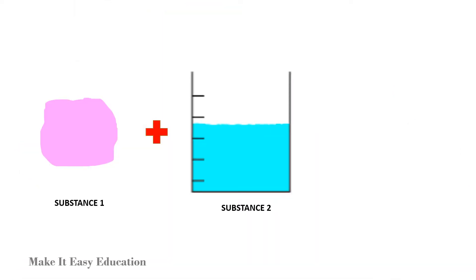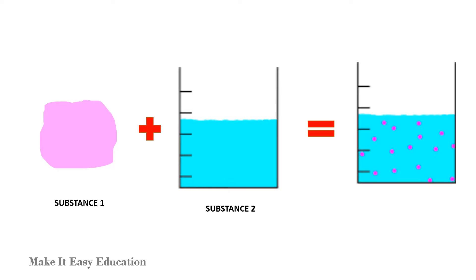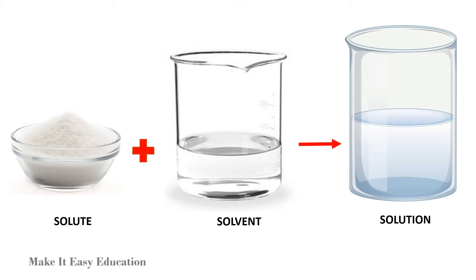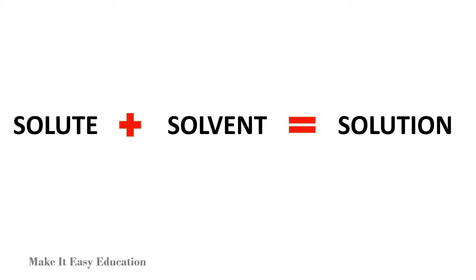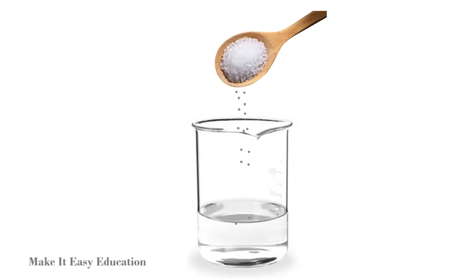When two substances are combined together in such a way that they evenly spread and mix with each other, it is called a solution. Solvent and solute are the two substances that make a solution. We can remember this by a simple formula: solute plus solvent is equal to solution. Sugar or salt dissolved in water are examples of a solution.